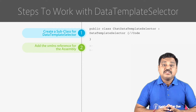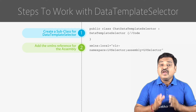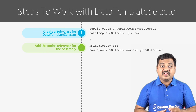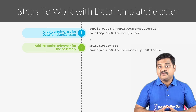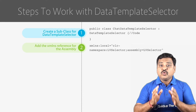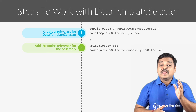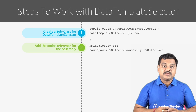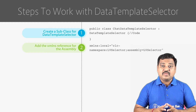Step 2: Since we need to refer the subclass of data template selector, we need to add the XML namespace reference for the assembly within the content page XAML. We need to use xmlns colon alias. For example: local equal to clr-namespace colon namespace name, assembly equal to assembly name.